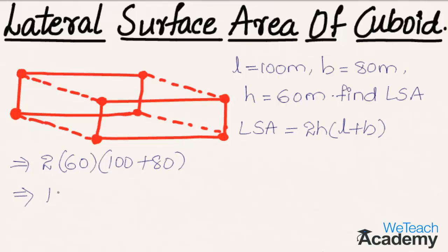That implies we get 2 into 60, which is 120, into the sum 180. Then by multiplying, we get the product as 21,600 square meters as the lateral surface area.